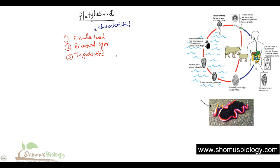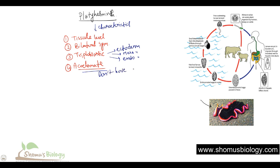Triploblastic means they have three different germ layers: ectoderm, mesoderm, and endoderm. They are also known as acoelomates. Acoelomate means they don't have a coelom — they don't have a body cavity. So all their internal structures are floating inside their body; there is no separate room to put them in. Nematodes are pseudocoelomates — they have a pseudocoelom — but organisms that came afterwards through evolution have a fully formed coelom.